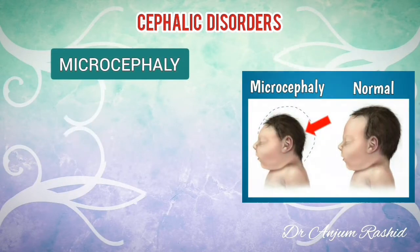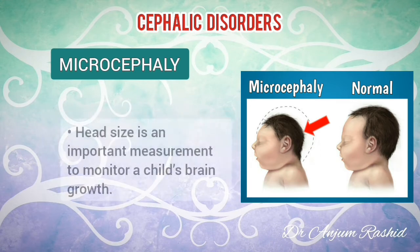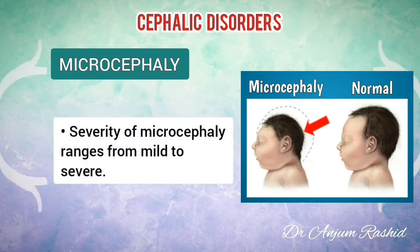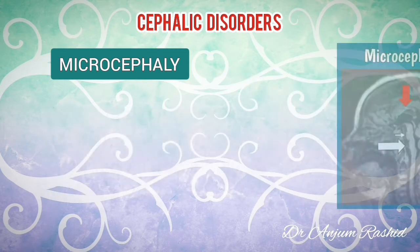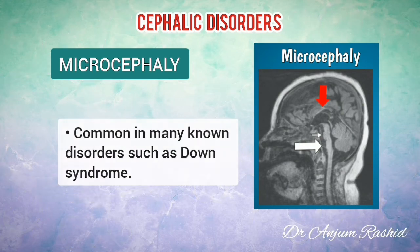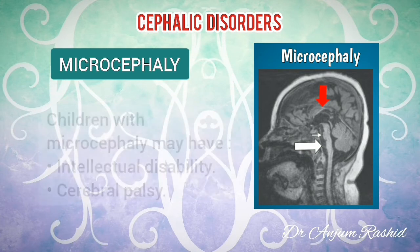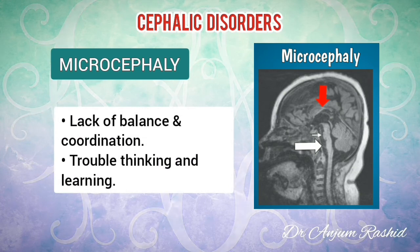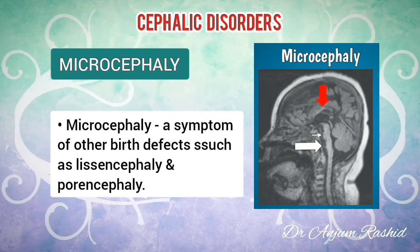I will also discuss microcephaly. It is a condition where a baby has a head size much smaller compared with other babies of the same age and sex. Head size is an important measurement to monitor a child's brain growth. The severity of microcephaly ranges from mild to severe. It can be present at birth, known as congenital microcephaly, or may develop postnatally, known as acquired microcephaly. This condition is common in many known disorders such as Down syndrome. Many children with microcephaly may have an intellectual disability as well as cerebral palsy, sensory disorders including vision problems, poor motor skills, lack of balance and coordination, and trouble thinking and learning. Microcephaly is also a symptom of other birth defects such as lissencephaly and porencephaly.